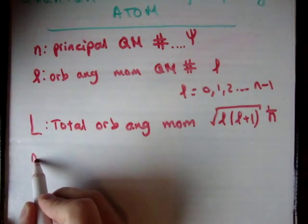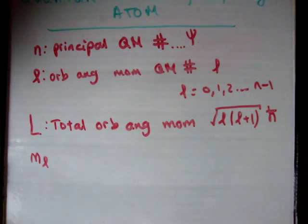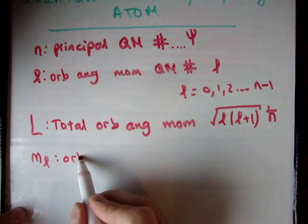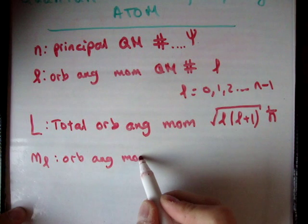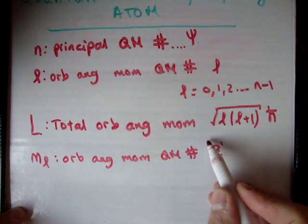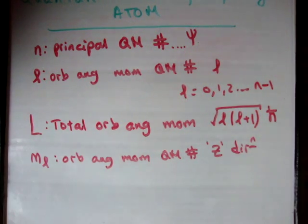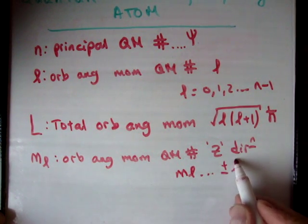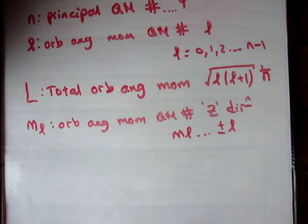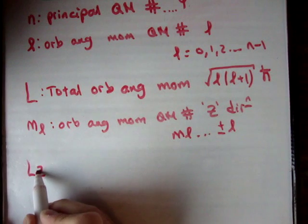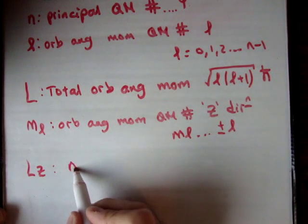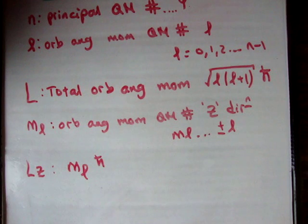Next is M sub L — the orbital angular momentum quantum number in the z direction, or the arbitrary z direction. M sub L can go up to plus or minus L. The z component of the total orbital angular momentum is given by M sub L times h-bar.